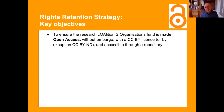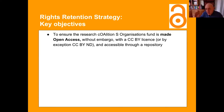So, what are the key objectives of the Rights Retention Strategy? First of all, to make sure that all the research and all publications that come out of research funded by Coalition S organisations is published open access in any way, shape or form — whether it's gold, green, or by a transformative agreement. The research we fund has to become open access immediately on publication. The Rights Retention Strategy is specifically designed to address the repository part — the green open access part — to make sure that all that research is accessible through a repository.